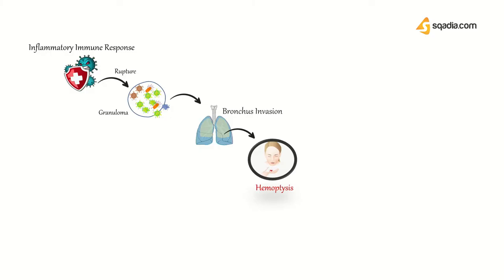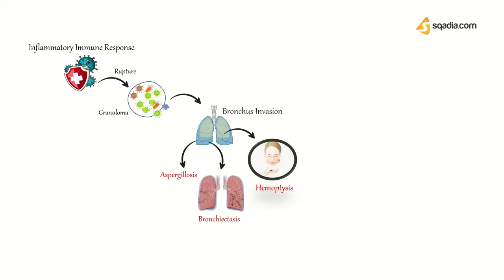The cavity produced by reactivated TB may give rise to fungus formation — specifically aspergillus — so this disease is then called aspergillosis. The damaged lungs can produce bronchiectasis, in which honeycombing of the lungs takes place. Bronchiectasis is characterized by excessive sputum production — copious amounts of foul-smelling sputum. Damage to the lungs also causes dyspnea and mucus-producing cough.